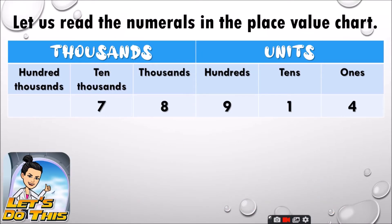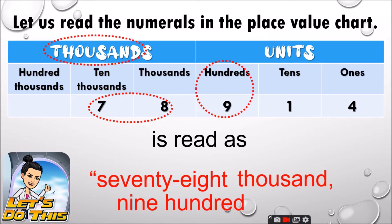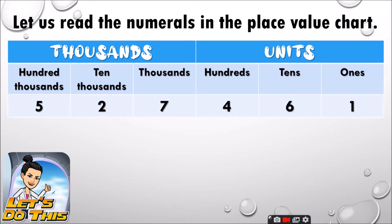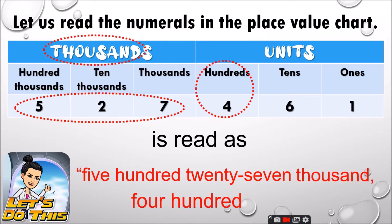So, let's read the numerals in the place value chart. Can you please read it aloudly? This number is read as 78,914. Another example. This number is read as 527,461.